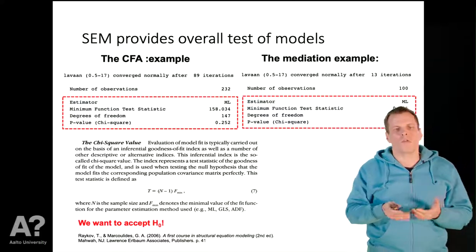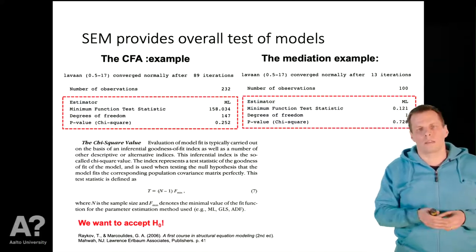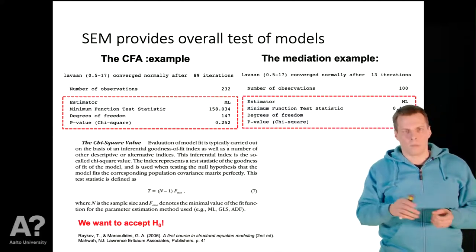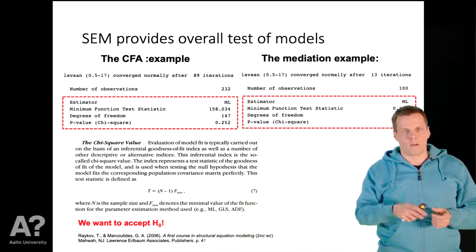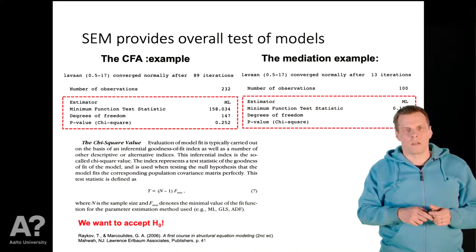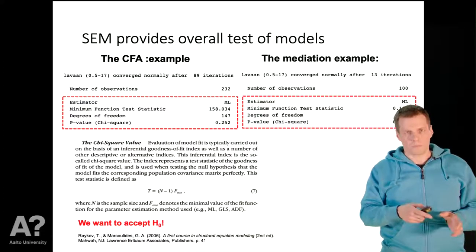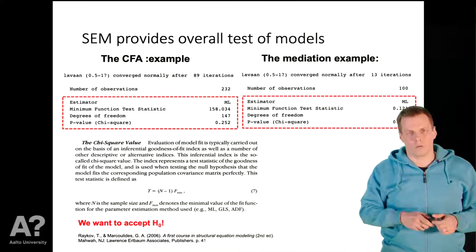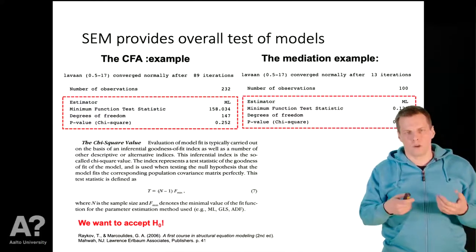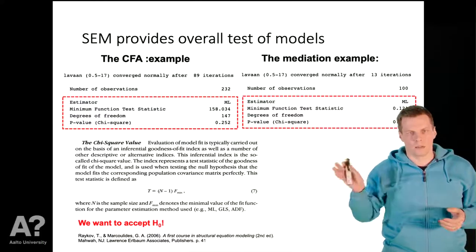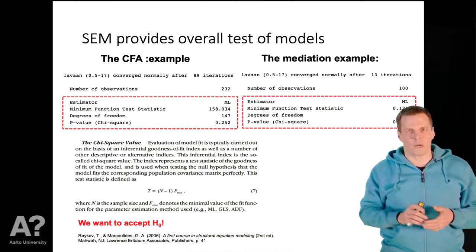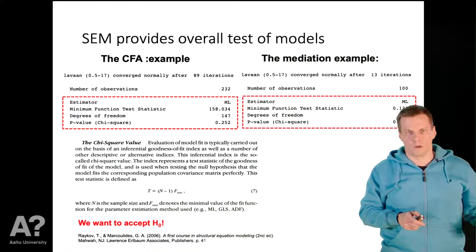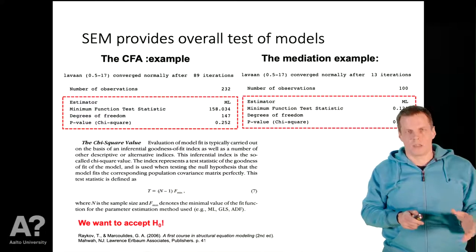There are also other advantages in SRM, such as the ability to model reciprocal causation — relationships that go in both directions. But that is more advanced. These are the main reasons why people apply structural regression models instead of regression with scale scores.